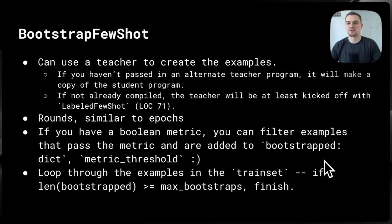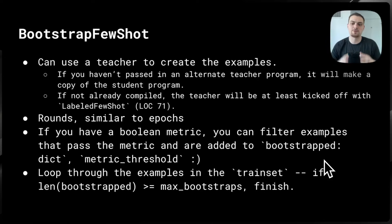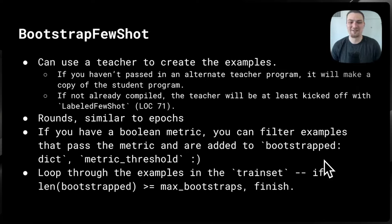If you add the sampling parameter, it'll add K random samples from the training set you've given it; otherwise it'll just add as many as you do have. Now, the key difference between Labeled FewShot and Bootstrap FewShot is that you're using a teacher to create the example. If you don't pass in an alternate teacher program, it will just make a copy of the student program and do traces through that program.